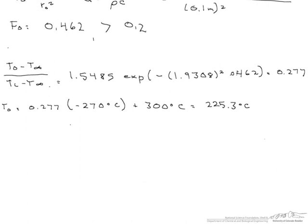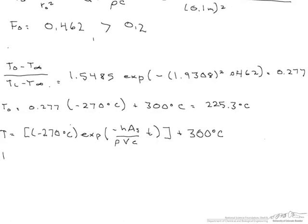Now let's say instead we had used our lump capacitance. Then our temperature would have been negative 270 degrees C times our exponential of minus H times A sub S, which is the surface area, divided by the density, times the volume, times the heat capacity, all multiplied by T. And this entire expression is added to our T infinity. So here our temperature is going to equal minus 270 degrees C times 0.18 plus 300, which equals 251 degrees C.